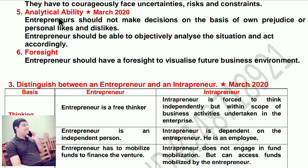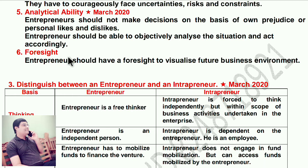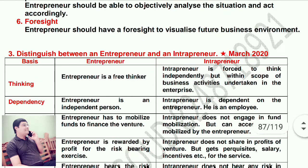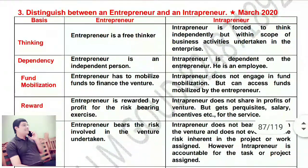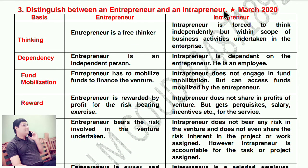Analytical ability, which is asked in board examinations: entrepreneur should not make decisions on the basis of personal prejudice or personal likes and dislikes. Entrepreneur should be able to objectively analyze the situation and act accordingly — purchasing and selling goods as per market conditions and customer needs. Foresight: entrepreneur should have foresight to visualize the future business environment and take care of the likes and dislikes of customers and clients.